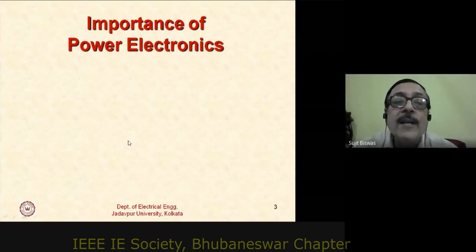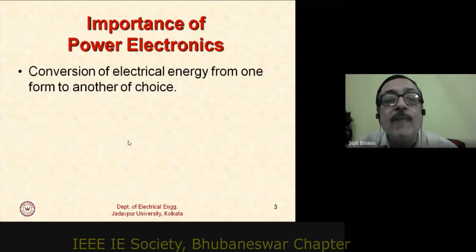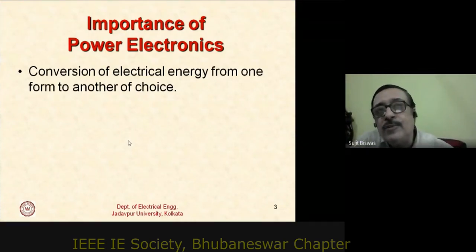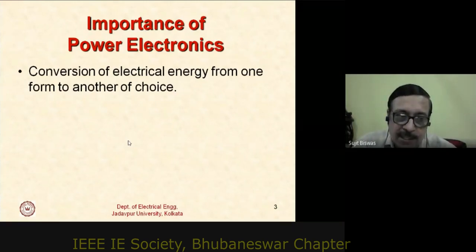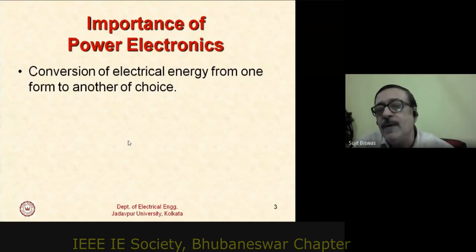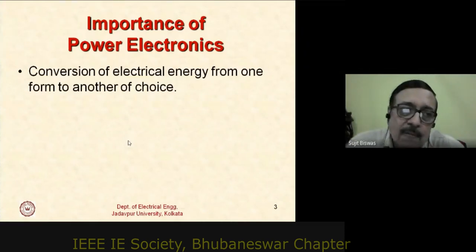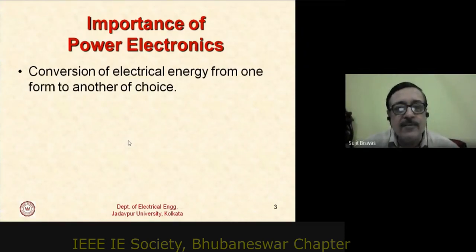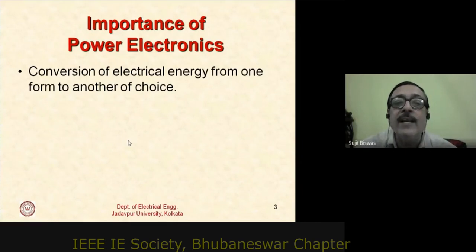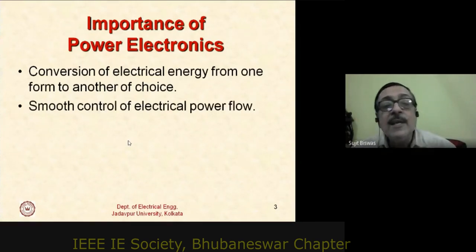The importance of power electronics includes the conversion of electrical energy from one form to another of your choice. If your input is DC you can make the output AC; if your input is AC at a particular frequency you can change the frequency, change the waveform, or convert a voltage source to a current source. Whatever juggling you want is possible through power electronics.